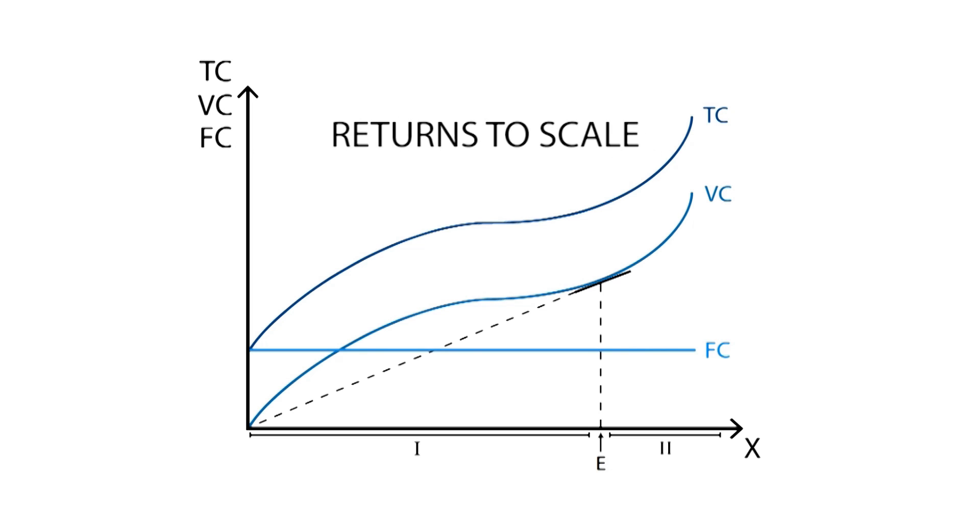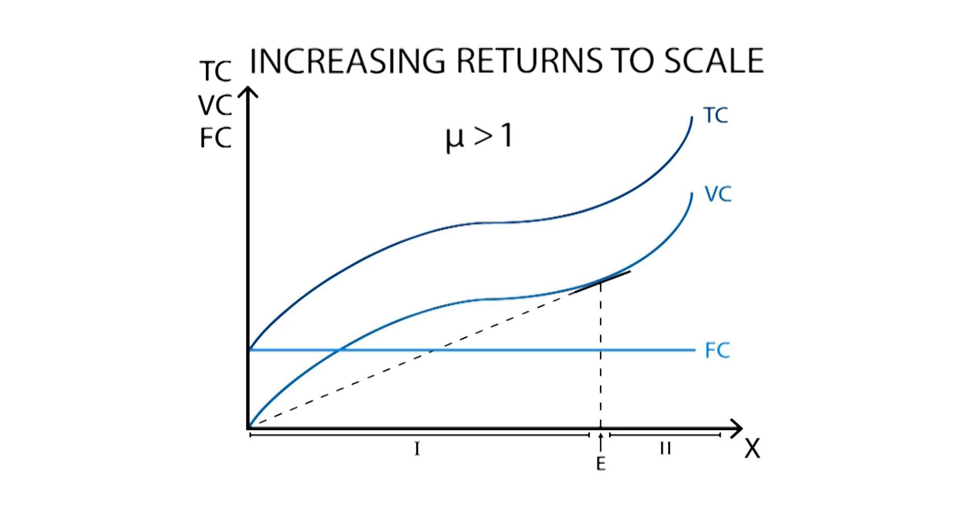This is related to returns to scale. In phase 1, where the elasticity of scale is greater than 1, there are increasing returns to scale, while phase 2 corresponds to decreasing returns to scale. In point E, the elasticity of scale equals 1, which represents constant returns to scale.